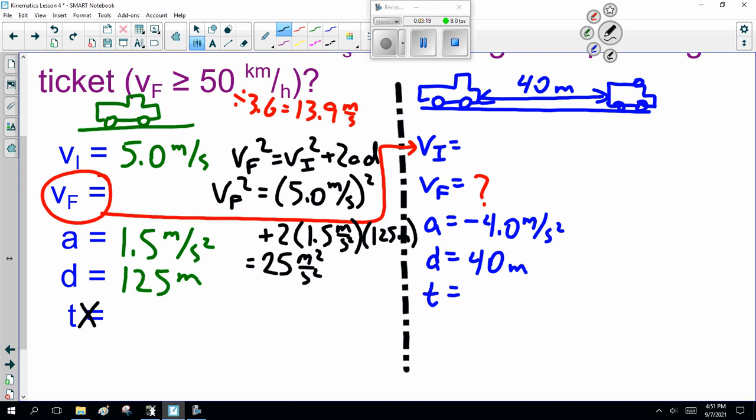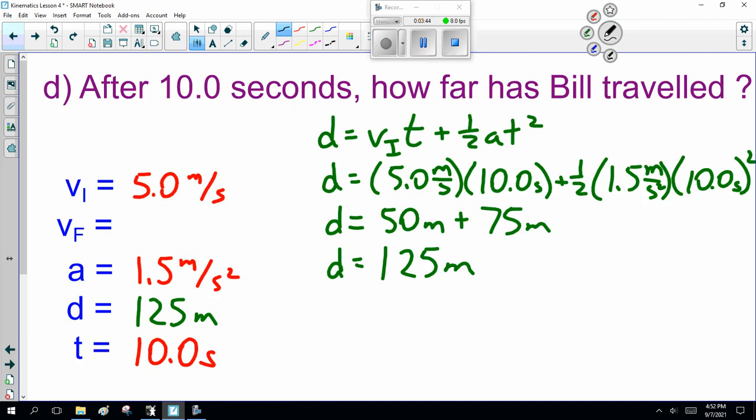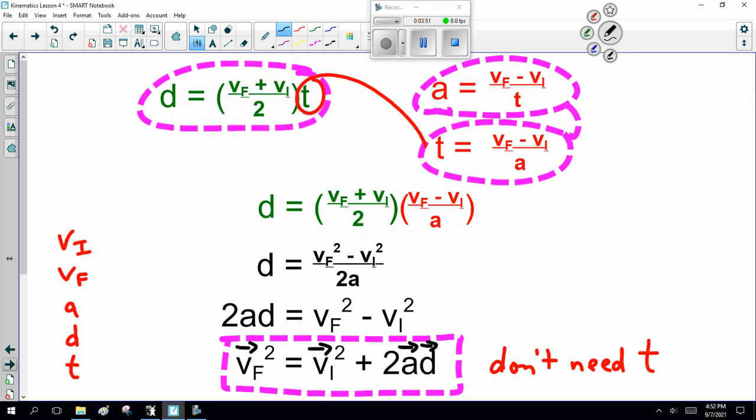Now, V_F² equals V_i², 5² plus 2 times a times d. So, he's got a distance of 125 meters. His acceleration is 1.5 m/s². Wait a minute. Have I seen 125 meters before? Right here. Oh, I do have his time. Forgive me, ladies and gentlemen. I just made the classic mistake of not reading back.